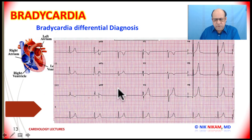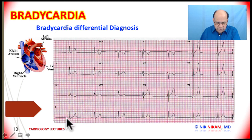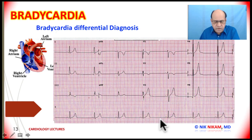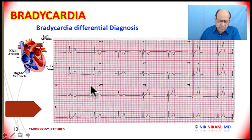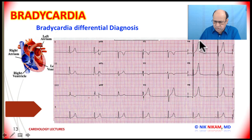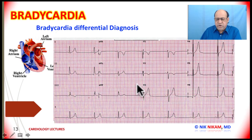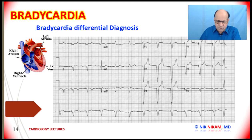Pause the tracing here and make your diagnosis. We see P waves followed by narrow QRS complexes — P, narrow QRS, P, narrow QRS — establishing sinus bradycardia. Once we have established the rhythm, the next thing is to look for additional features. Here we see narrow QRS bradycardia along with tall T waves that have a narrow base. Narrow-base tall T waves — you should always think of hyperkalemia.